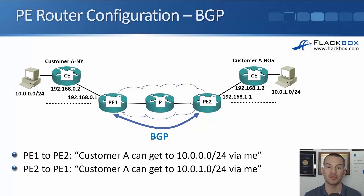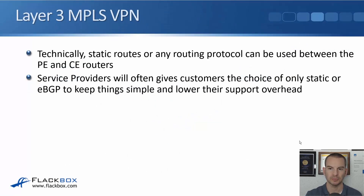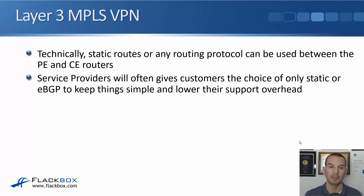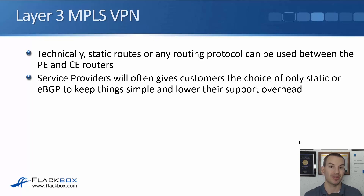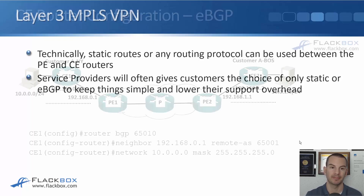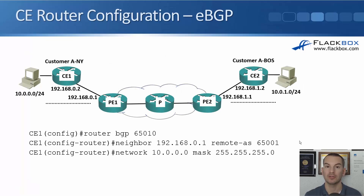The core P routers don't know anything about customer routes — only the PE routers do, making this a more scalable solution. Technically, static routes or any routing protocol can be used between the PE and CE routers: static, RIP, EIGRP, OSPF, etc. However, service providers often give customers the choice of only static or eBGP to keep things simple and reduce support overhead. Providers know BGP very well and are already using BGP between the PE routers.